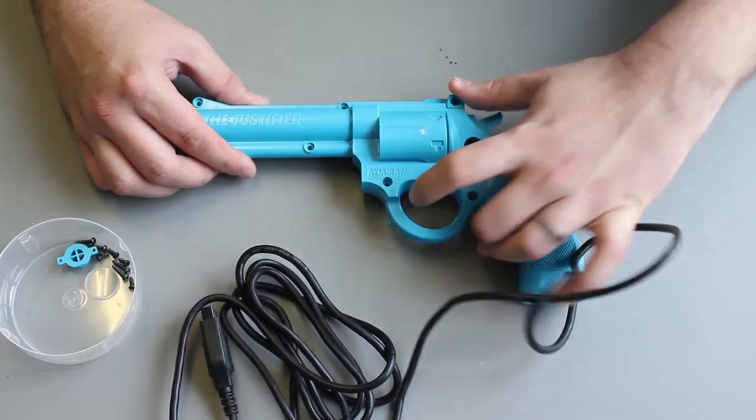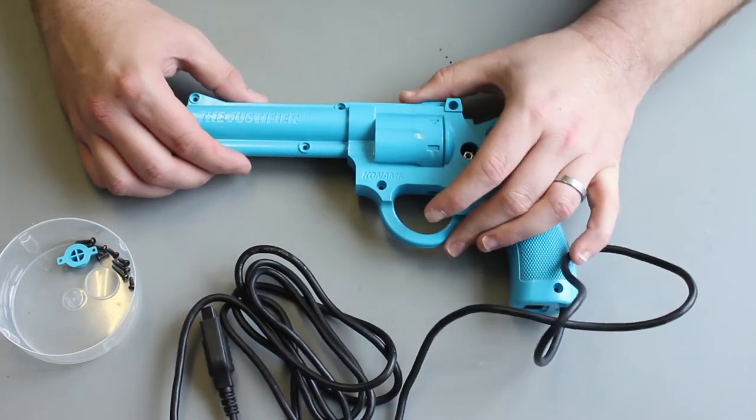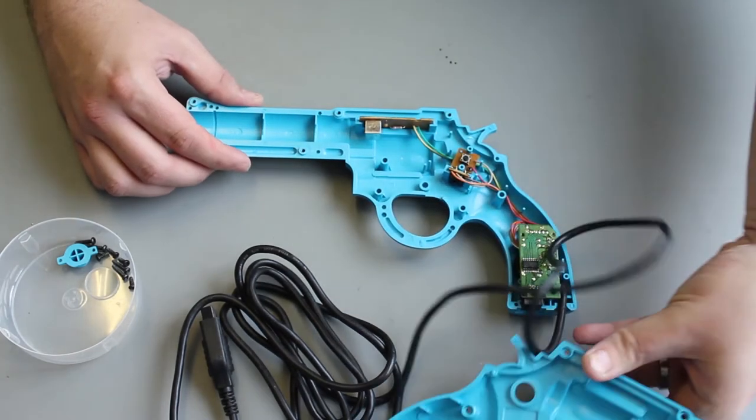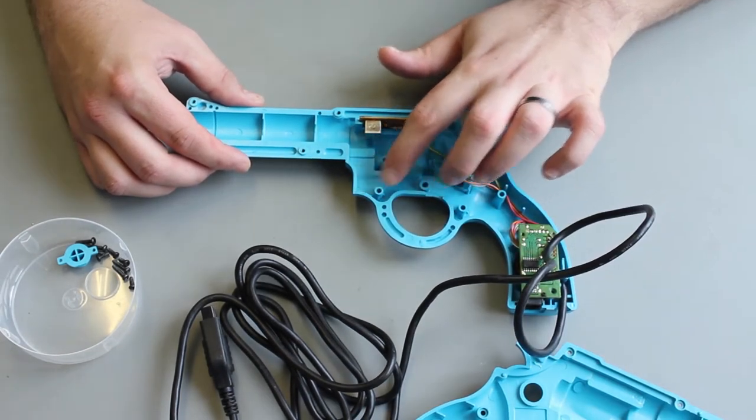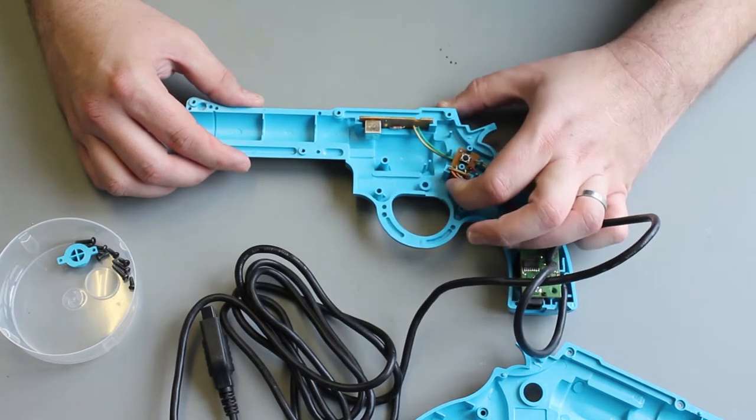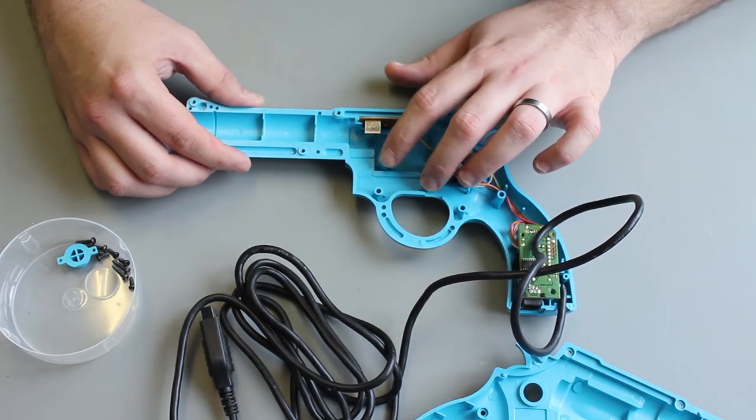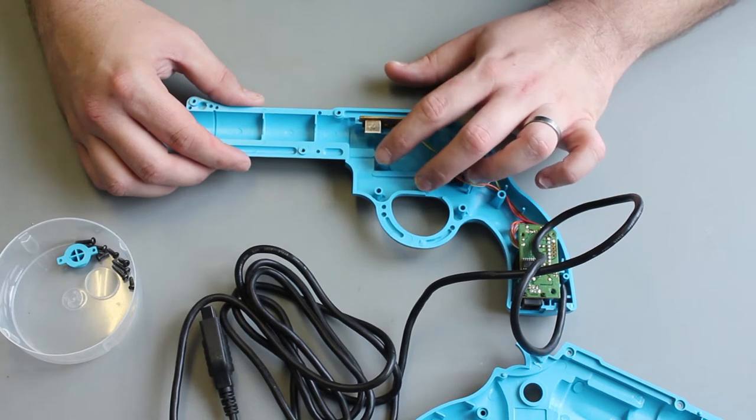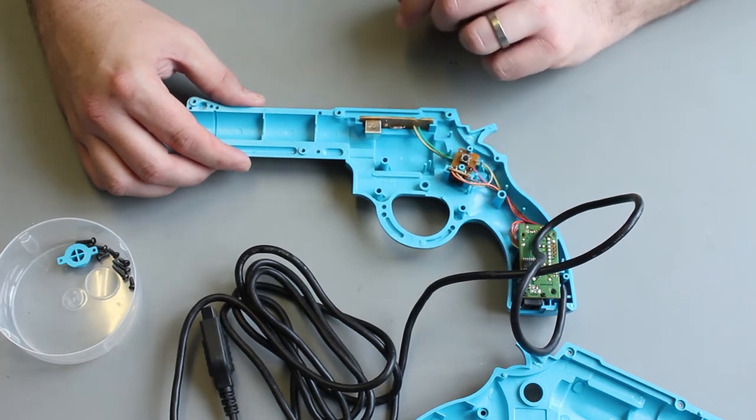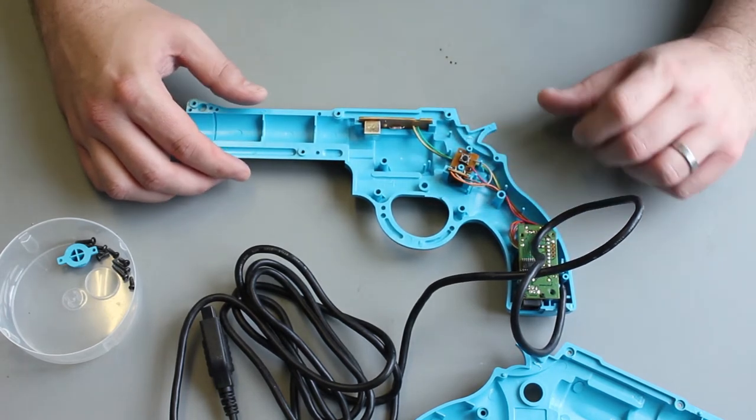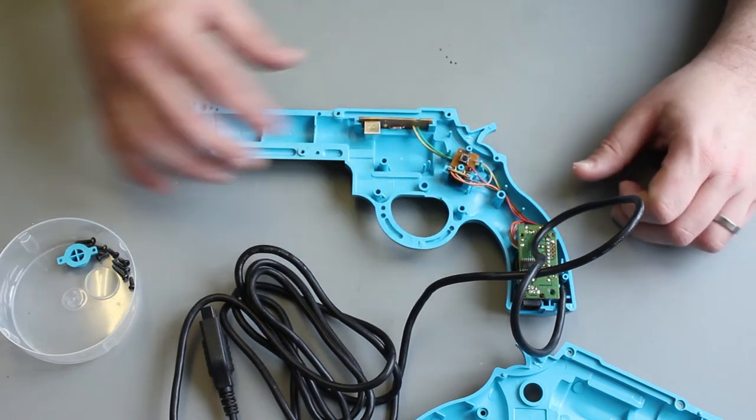So what you can see here is the trigger is missing on this Justifier. If we open it up you can see the trigger would sit in this area here and would actuate this button. Someone's removed it so we're going to need to print a replacement. So in order to do that we need to get an idea for what the trigger actually looked like.